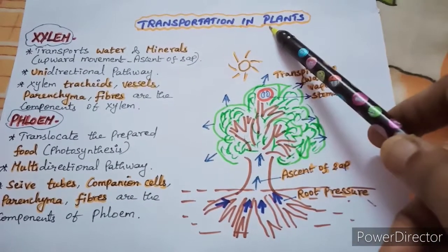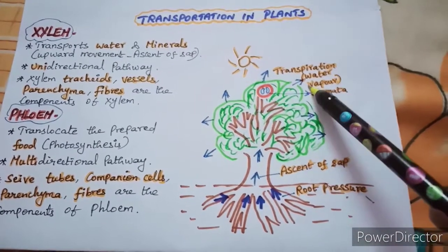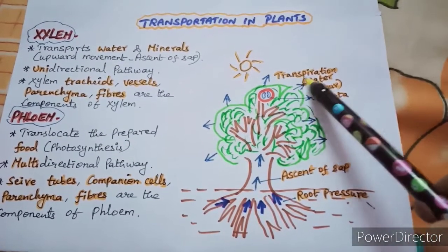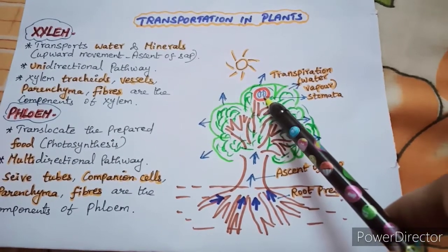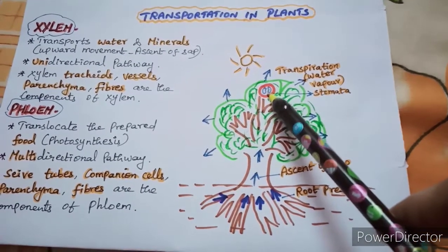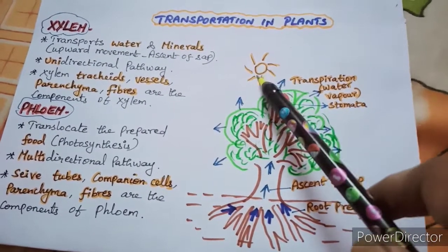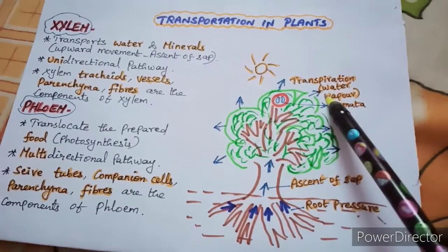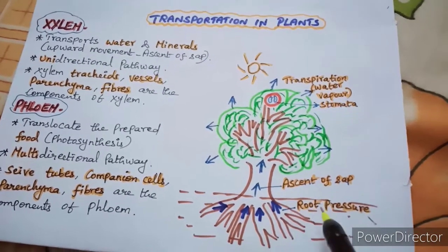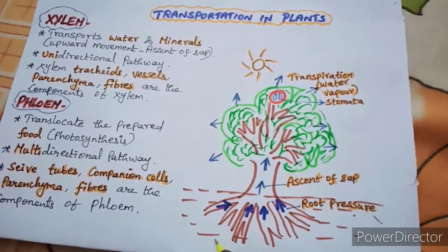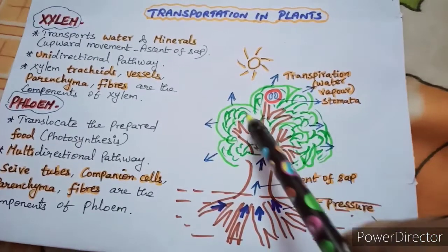Coming to the process of transportation in plants — during daytime, the stomata get open and release excess water in the form of water vapor. This process is known as transpiration. As you know, the structure of stomata consists of kidney-shaped structures called guard cells, which help to open and close the stomata. During daytime it releases excess water as water vapor — this is transpiration. It creates pressure in the root, called root pressure, which allows water and minerals to be absorbed by the xylem vessels and other components and taken to different parts.